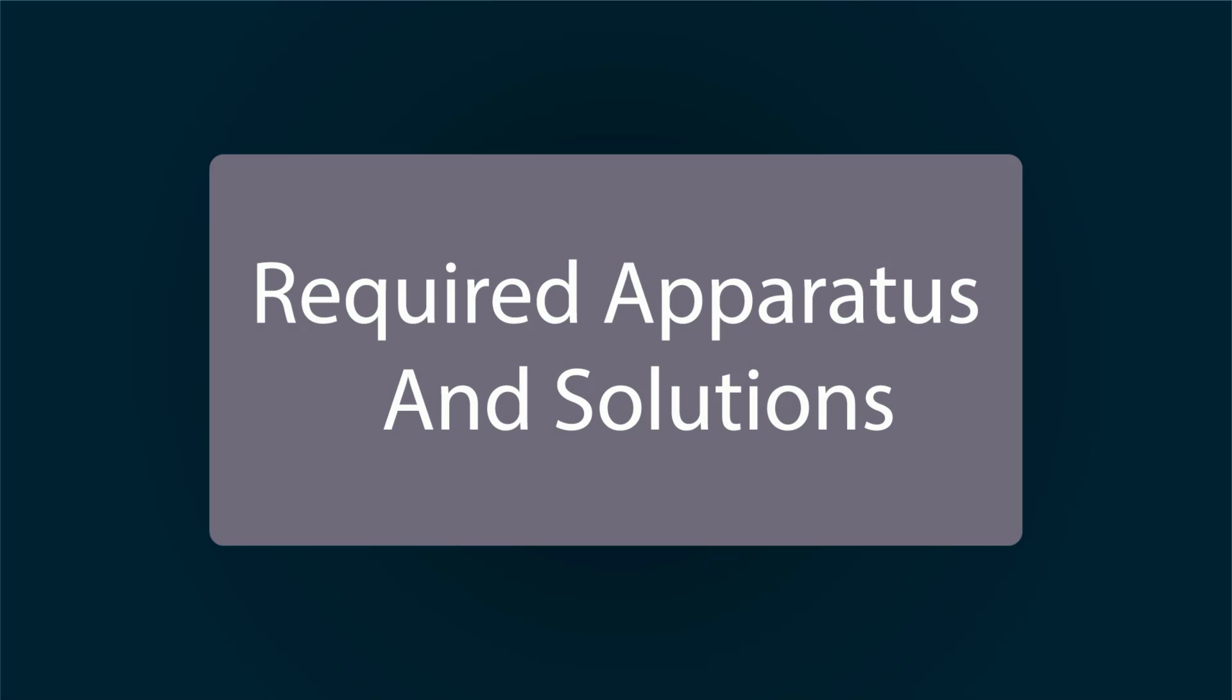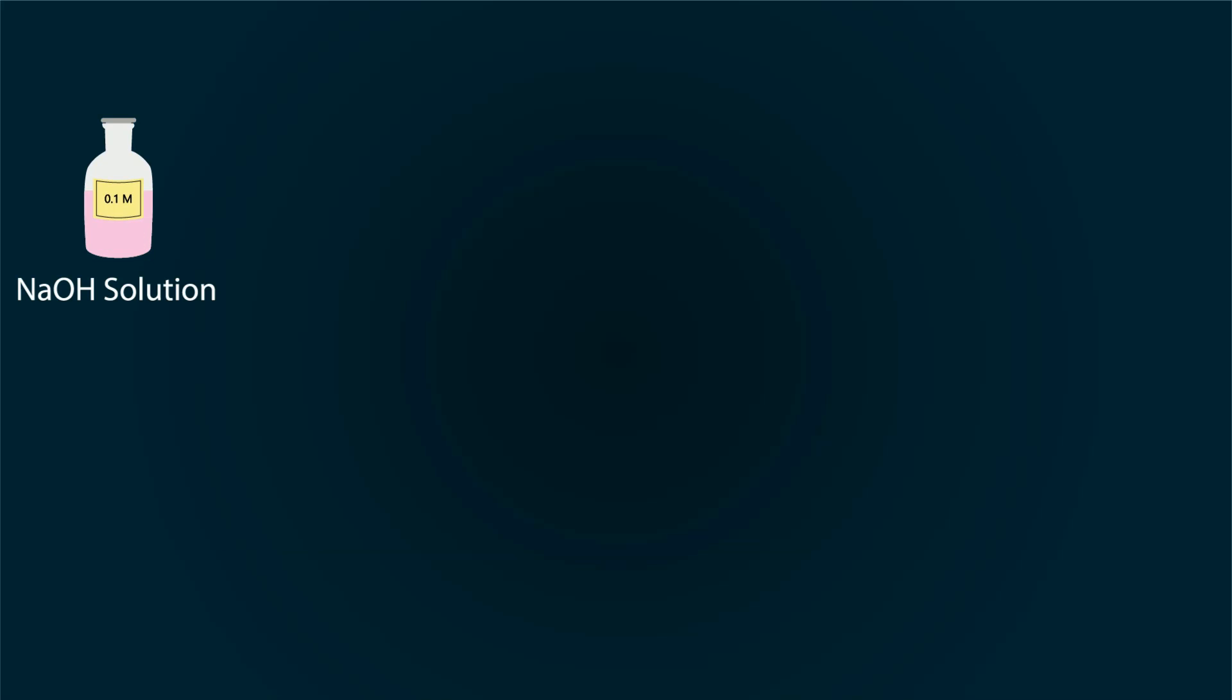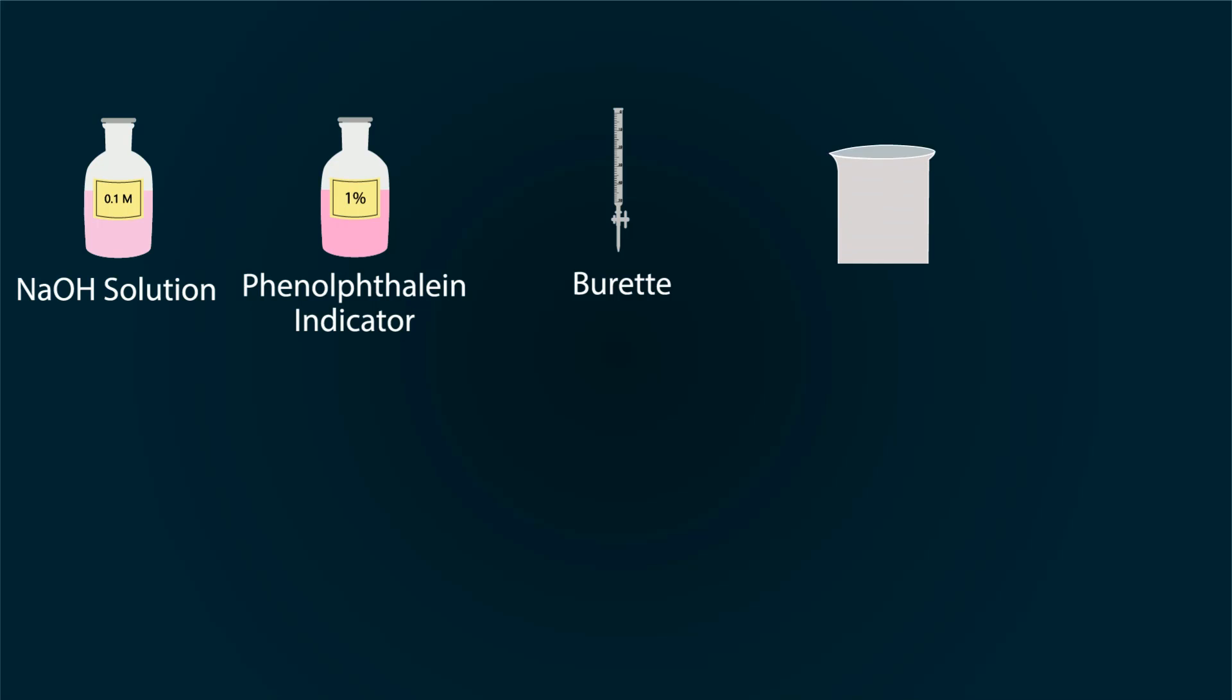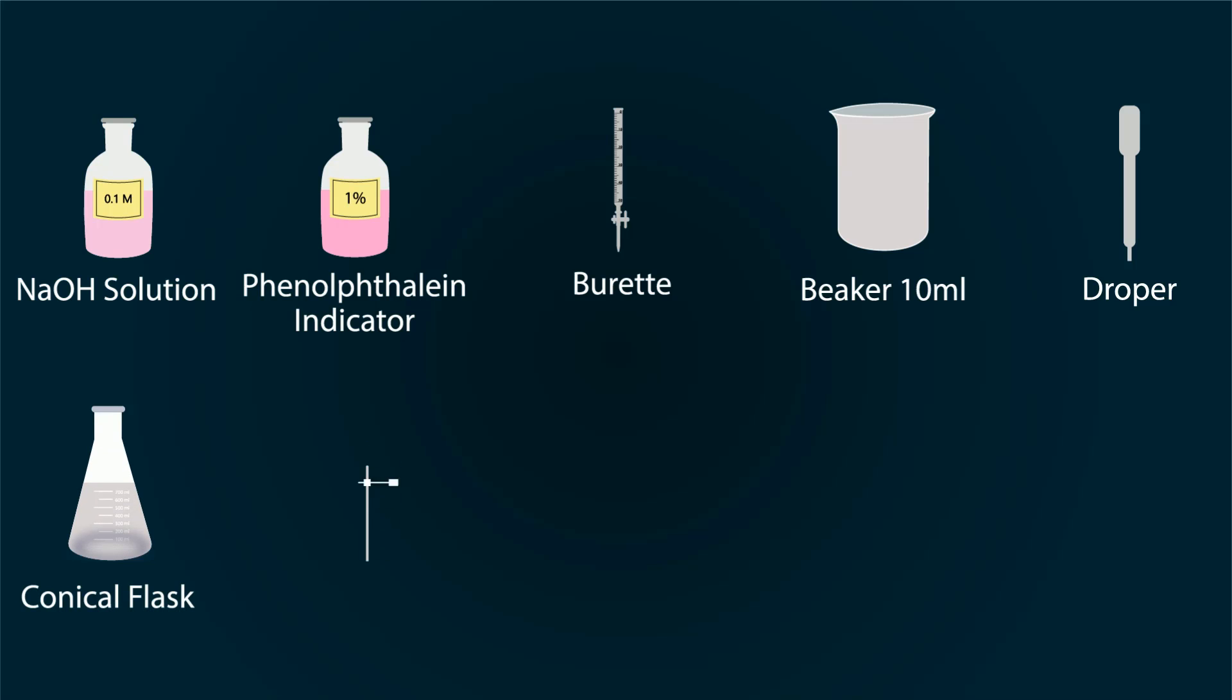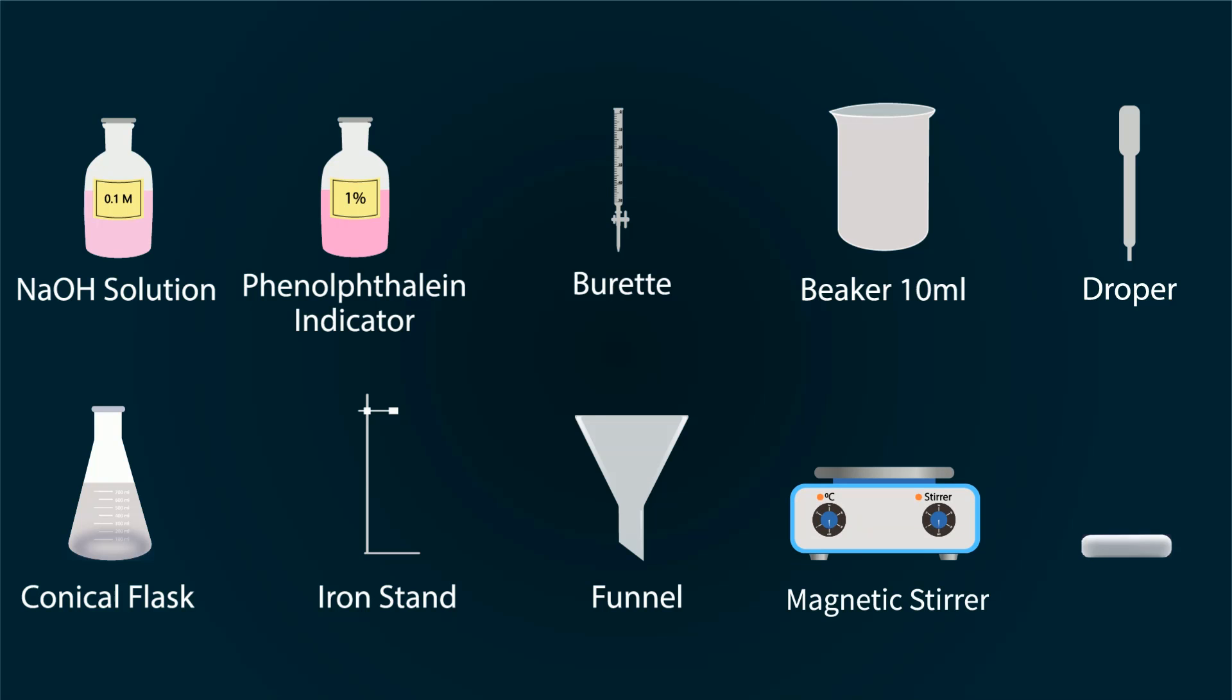The required apparatus and solutions include: 0.1 molar NaOH solution, 1% phenolphthalein indicator, a burette, a water beaker of 10 ml, a dropper, conical flask, an iron stand, a funnel, a magnetic stirrer with magnetic bar.